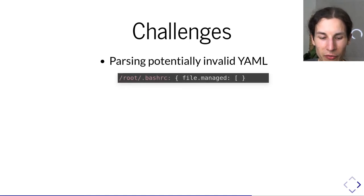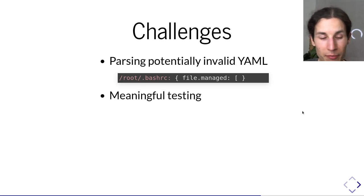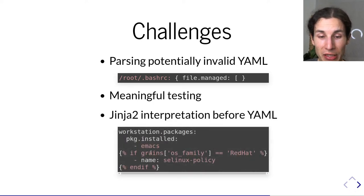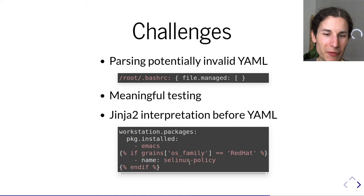That covers the demo. A few challenges we faced: one challenging part is that when you're currently typing in your editor, you don't have valid YAML, so we need to be able to parse broken YAML. That's also why we only use the PyYAML scanner and have that custom state machine that Cedric implemented. Meaningful testing is, as you might have guessed, pretty challenging — especially with different editors in play. The most challenging part is really the Jinja2 interpretation. The really nasty issue is that the templating is applied before the YAML parsing, which means extracting information from files like this can be really tough because you can go really crazy with Jinja templating. This is yet an unsolved problem.